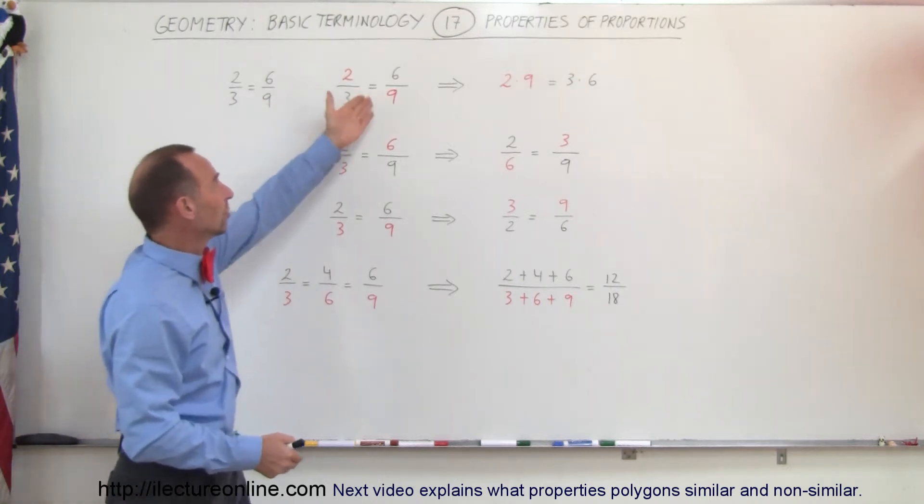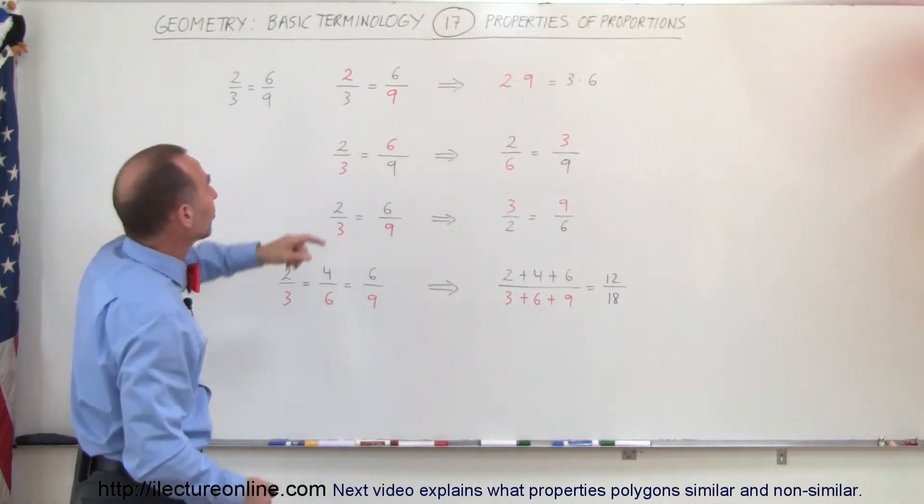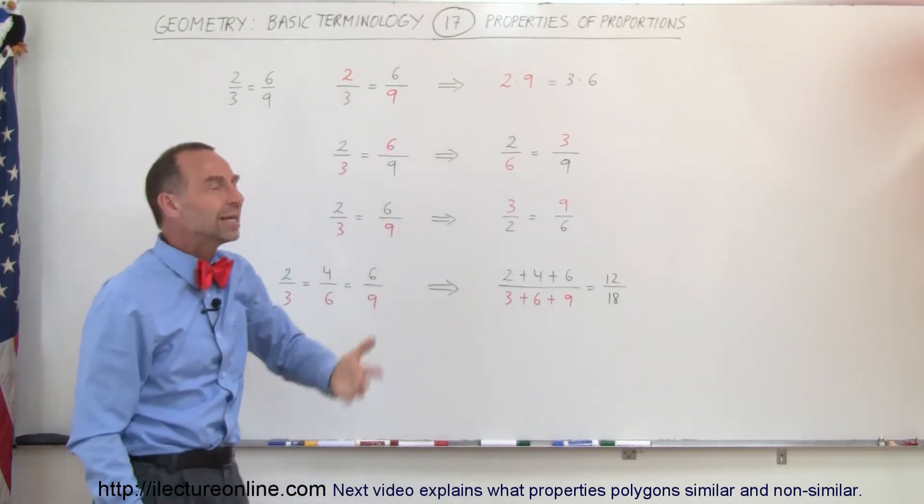Now let's say we have 2/3 equals 6/9, and a quick check will say yes, that's indeed the case because we multiply 2 by 3, we get 6, multiply 3 by 3, we get 9, so therefore they must be equal to one another.